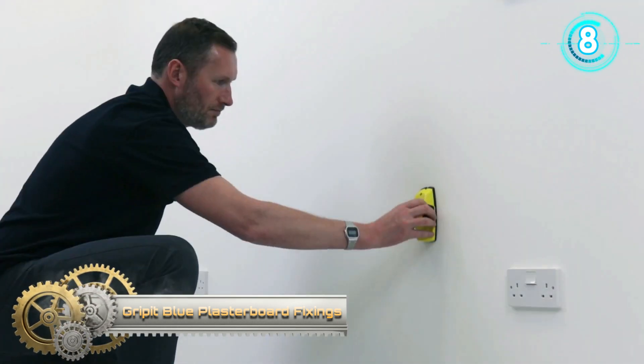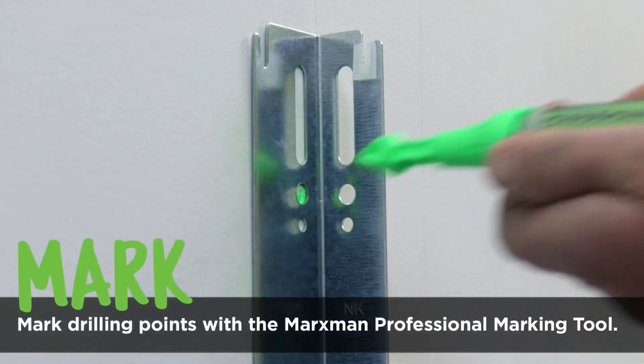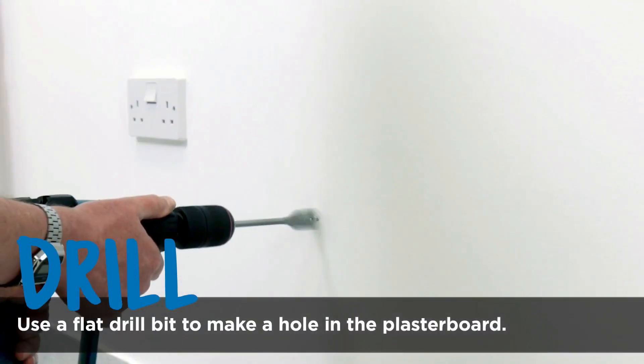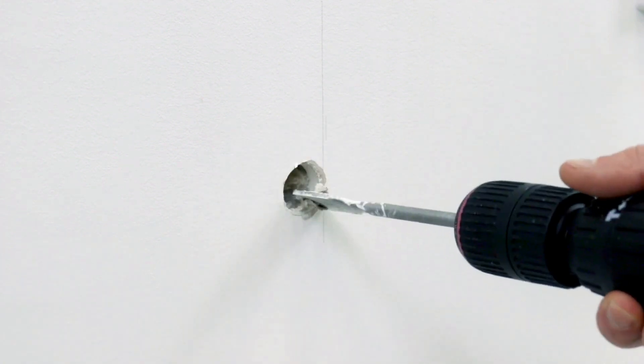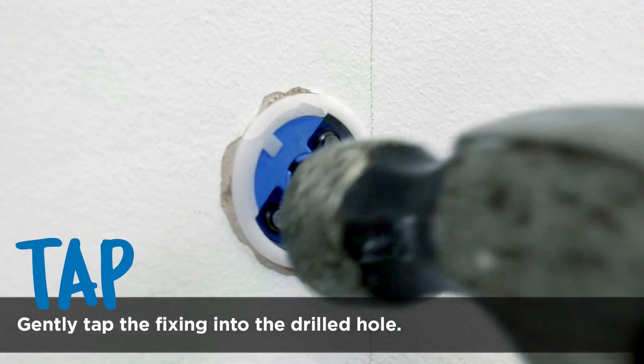Use Grip it blue plasterboard fixings for the seriously heavy stuff. These fixings will hold the heaviest of domestic heating boilers no trouble. Grip its are not suitable for cantilever, extendable, pull out or full motion TV brackets.